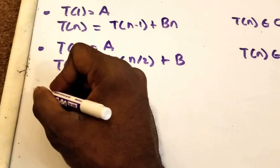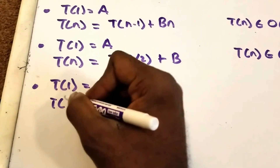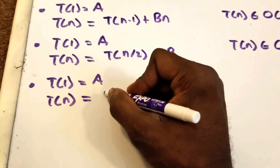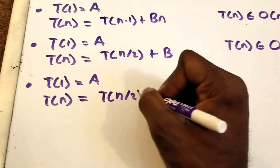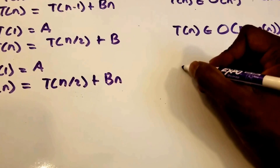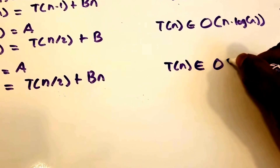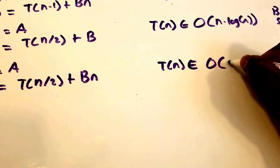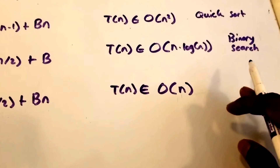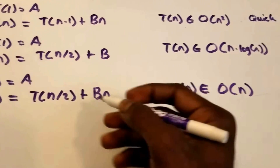Let's look at another recurrence relation. We have our base case T(1) = a, and then our recursive case T(n) = T(n/2) + B·n. Then our time complexity for this recurrence relation is O(n). I actually can't think of an example algorithm for this recurrence relation, so let's go ahead and look at another one.